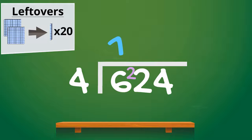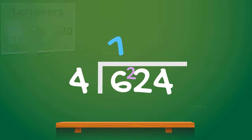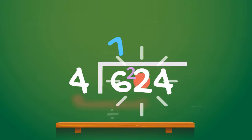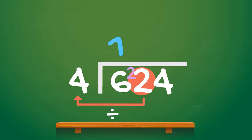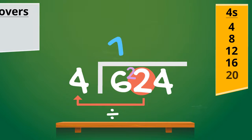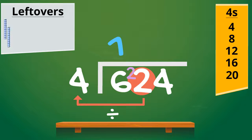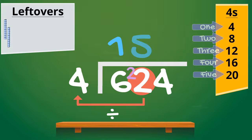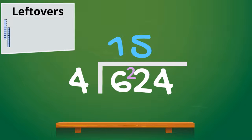So let's share out the tens now. We have 22 divided by 4. Let's skip count up in 4s: 4, 8, 12, 16, 20 — with 2 left over. So how many lots of 4 are there in 22? That's right, there are 5 with 2 left over.